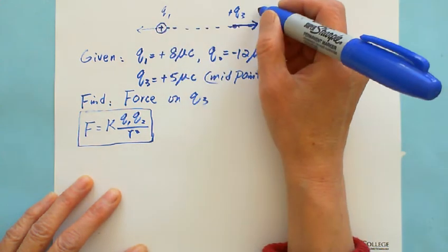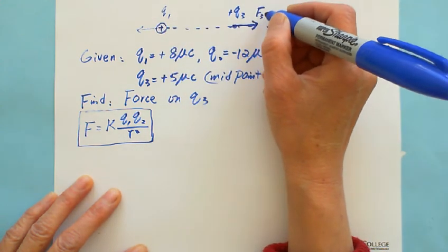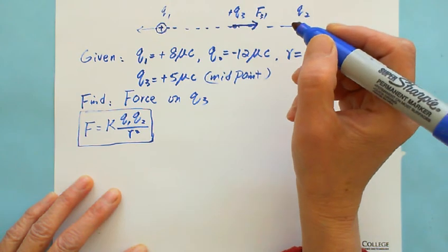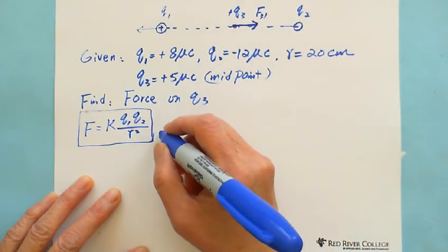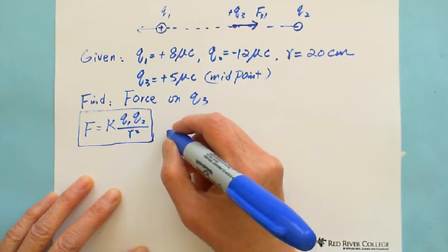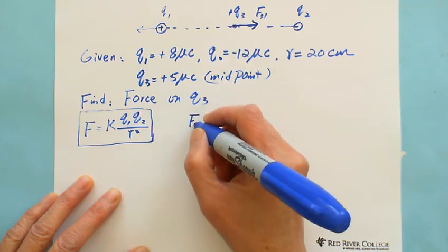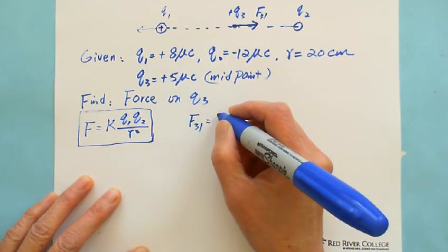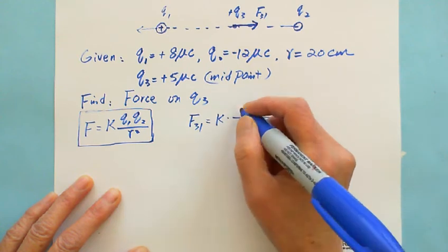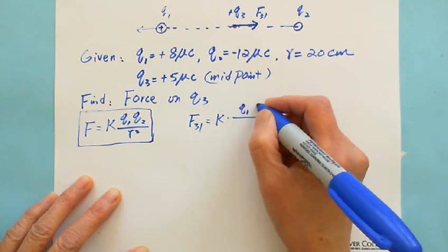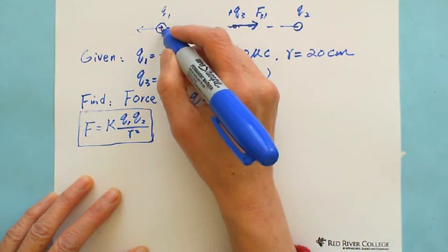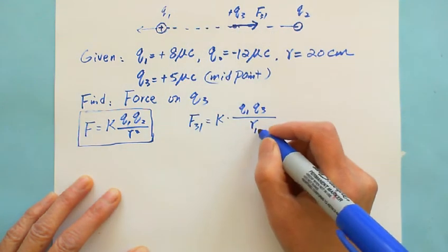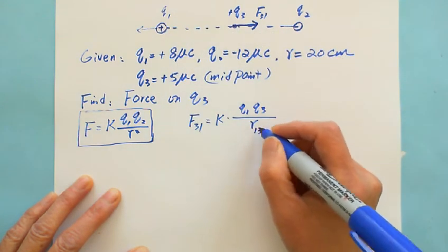That's why we write the formula this way: F31 equals K times Q1 Q3. The distance is from Q1 to Q3, that's why we label on the bottom Q1 to Q3 squared.